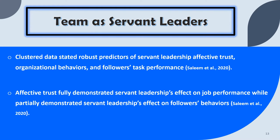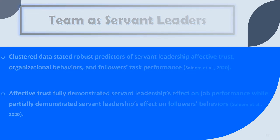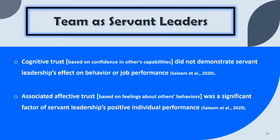The team as servant leaders: clustered data has stated robust predictors of servant leadership are effective trust, organizational behaviors, and followers' task performance. Effective trust fully demonstrated servant leadership's effect on job performance while partially demonstrating its effect on followers' behaviors. Cognitive trust, which is based on competence and others' capabilities, did not demonstrate servant leadership's effect on behavior or job performance. However, affective trust, which is based on feelings about others' behaviors, was a significant factor of servant leadership's positive individual performance.